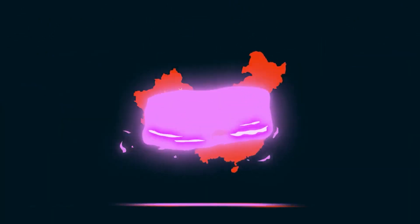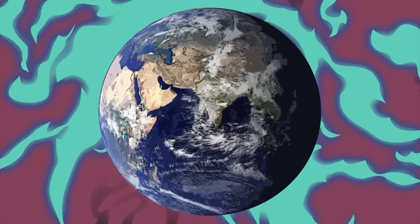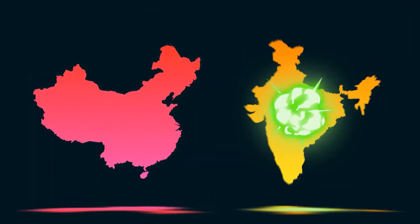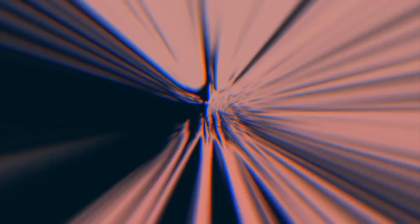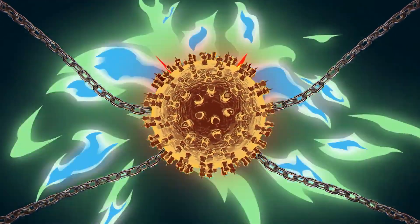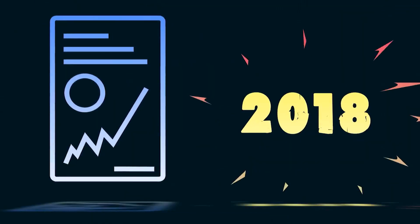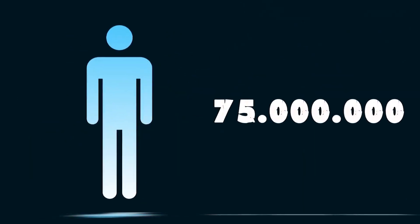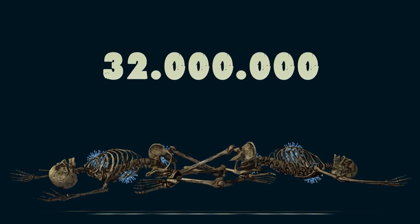The third epidemic was the largest. It began in China in 1855, and within a few decades had spread to all continents. More than 12 million people died in China and India alone. AIDS is now one of the most significant health problems in the world. Statistics from 2018 indicate that since 1981, the beginning of the epidemic, 75 million people had contracted HIV, and 32 million had died from co-contaminant diseases.